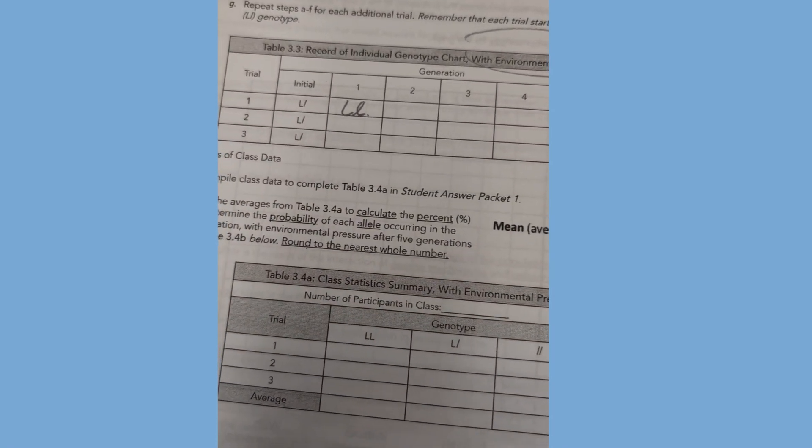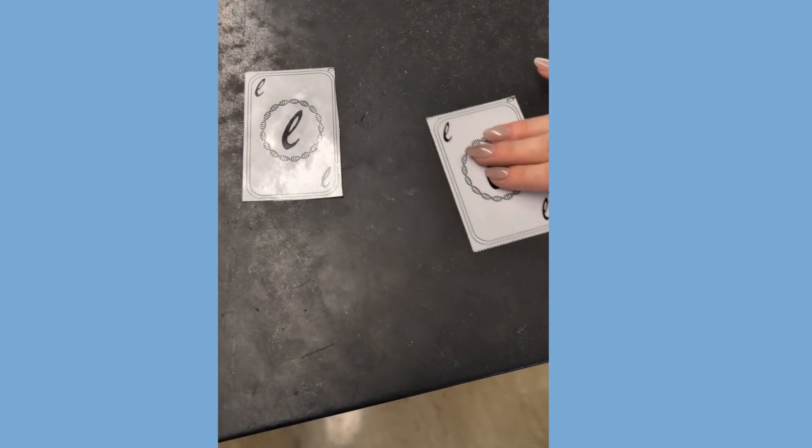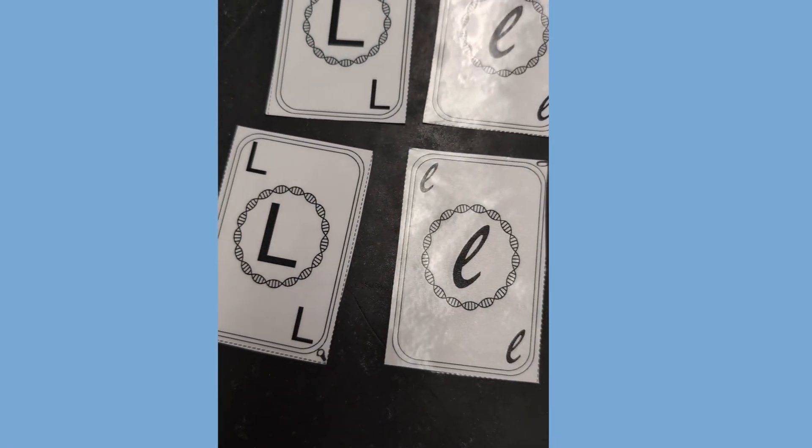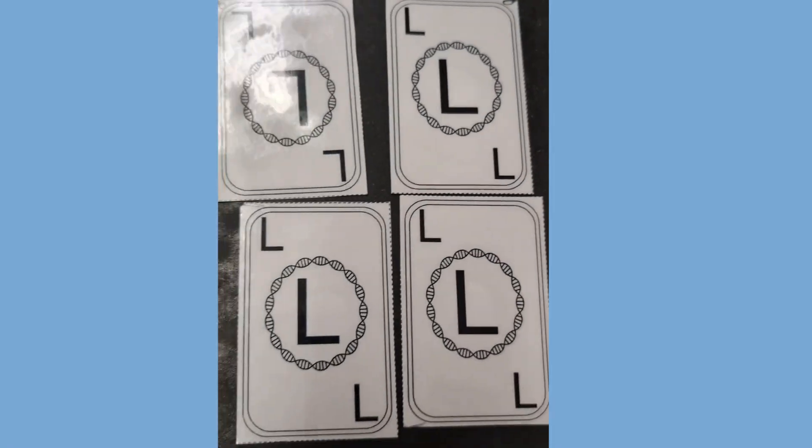Now we're going to flip for partner number two. Partner number two flips a little L and partner one flips a little L as well. This genotype will not survive, so they have to take their cards back, reshuffle, and try again. They flip a big L, big L for partner two. That genotype will survive. It's recorded in generation one. All players take back their cards and reset their four card deck to match their genotype if it changed. This partner has a genotype of big L, little L, so their four cards reflect that with two sets of big L, little L. This partner has a genotype of big L, big L, and their cards reflect that by having four big L's.